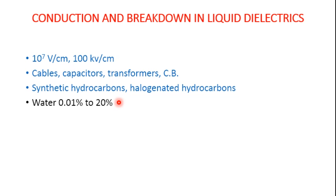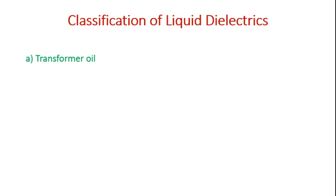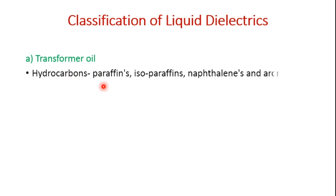Utmost care has to be taken in the case of capacitors, cables, and transformer oils. Coming to the classification of liquid dielectrics: transformer oil is almost colorless, consisting of a mixture of hydrocarbons — paraffins, isoparaffins, naphthalenes, and aromatic hydrocarbons.